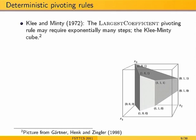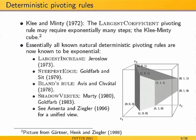Subsequently, people proposed many other pivoting rules: the largest increase rule (pick the edge giving the largest increase in the objective), the steepest edge rule (pick the edge with the highest slope), Bland's rule, and the shadow vertex rule. The shadow vertex rule is notable because it was shown to have polynomial smoothed complexity. However, for all of these rules, people could construct examples for which the simplex takes an exponential number of steps.